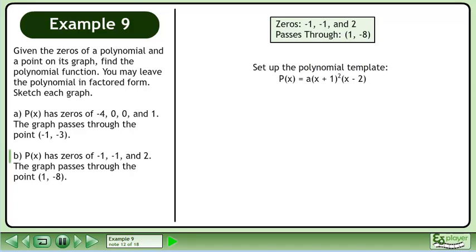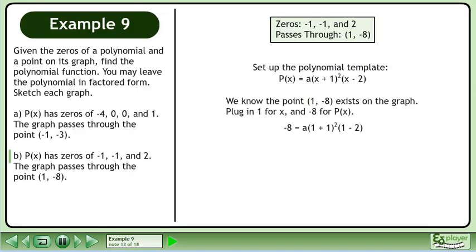Set up the polynomial template: P(x) = a(x + 1)²(x - 2). We know the point exists on the graph. Plug in 1 for x and -8 for P(x).